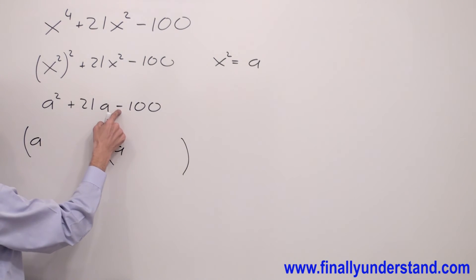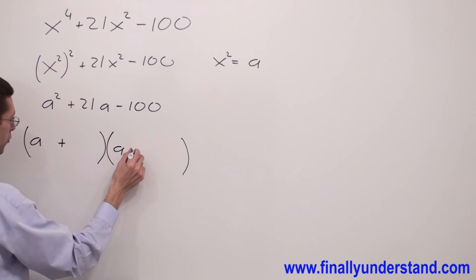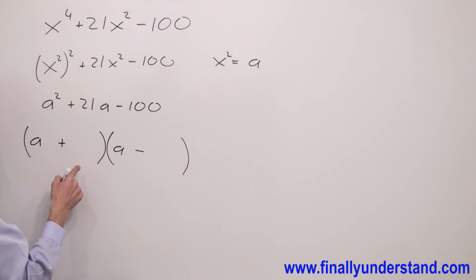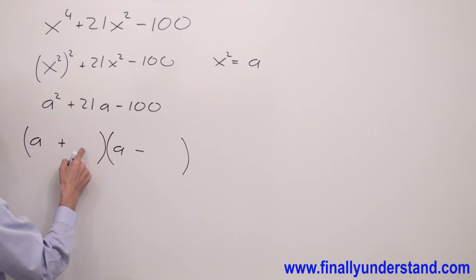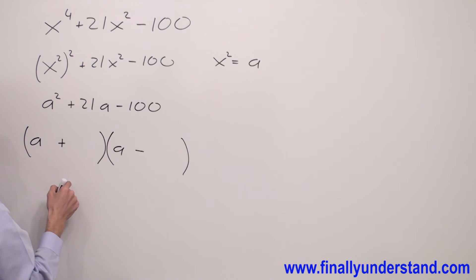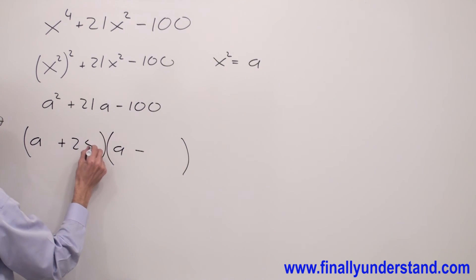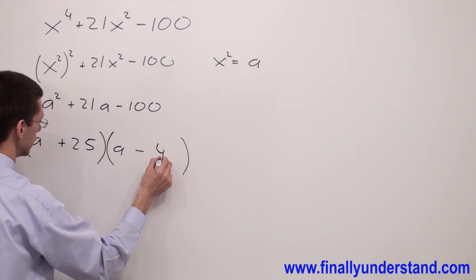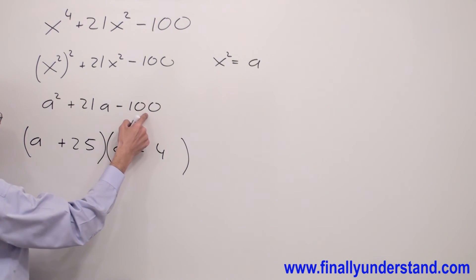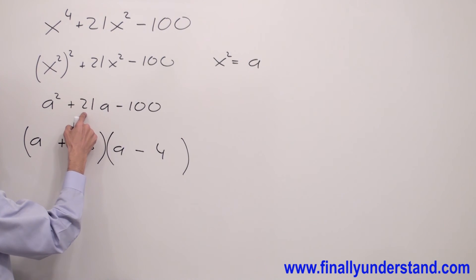Next, I have to look at the sign next to the third term — it's negative — which means the signs in my factors are different. I need to find two numbers that multiply to give me negative 100 and add to give me positive 21. Those numbers are 25 and negative 4: 25 times negative 4 gives me negative 100, and 25 plus negative 4 gives me 21.